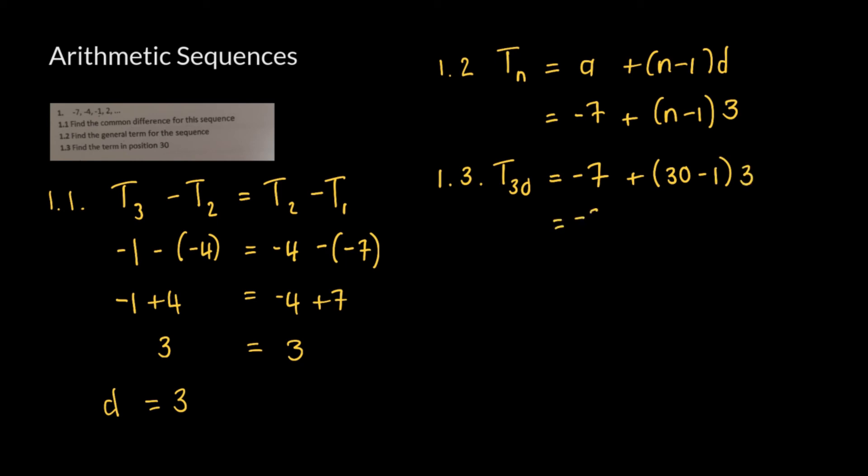This is going to equal to negative 7 plus 30 minus 1 is going to give us 29 multiplied by 3. This is going to equal to negative 7 plus 29 multiplied by 3 is going to give us 87. And negative 7 plus 87 is going to equal to 80.